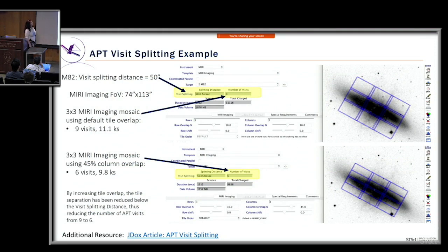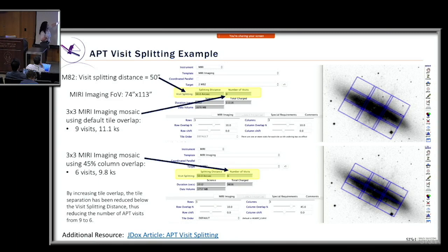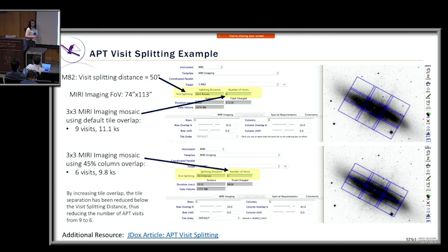Here's an example of visit splitting with mosaic imaging of target M82, where APT determined a visit splitting distance of 50 arc seconds. Using default values with 10% overlap for rows and columns, APT determined nine visits are needed. However, by increasing the column overlap to 45%, the tile separation is reduced below the visit splitting distance, and the observation goes from nine visits down to six visits — saving charge time while still achieving the science goal.